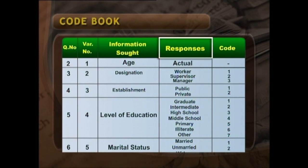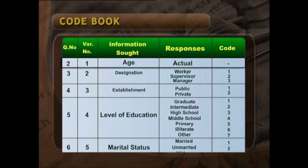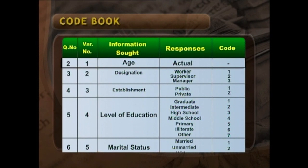In the next column, we give the responses expected from the respondents. We have to remember that responses which are in numeric values need not be given codes because they can be directly tabulated. For example, variable one is age, and the response is likely to be numeric — it may be 32 years. So in the code column, the last column, we put a dash. That means we transfer the numeric value to the master chart; we do not give a code.